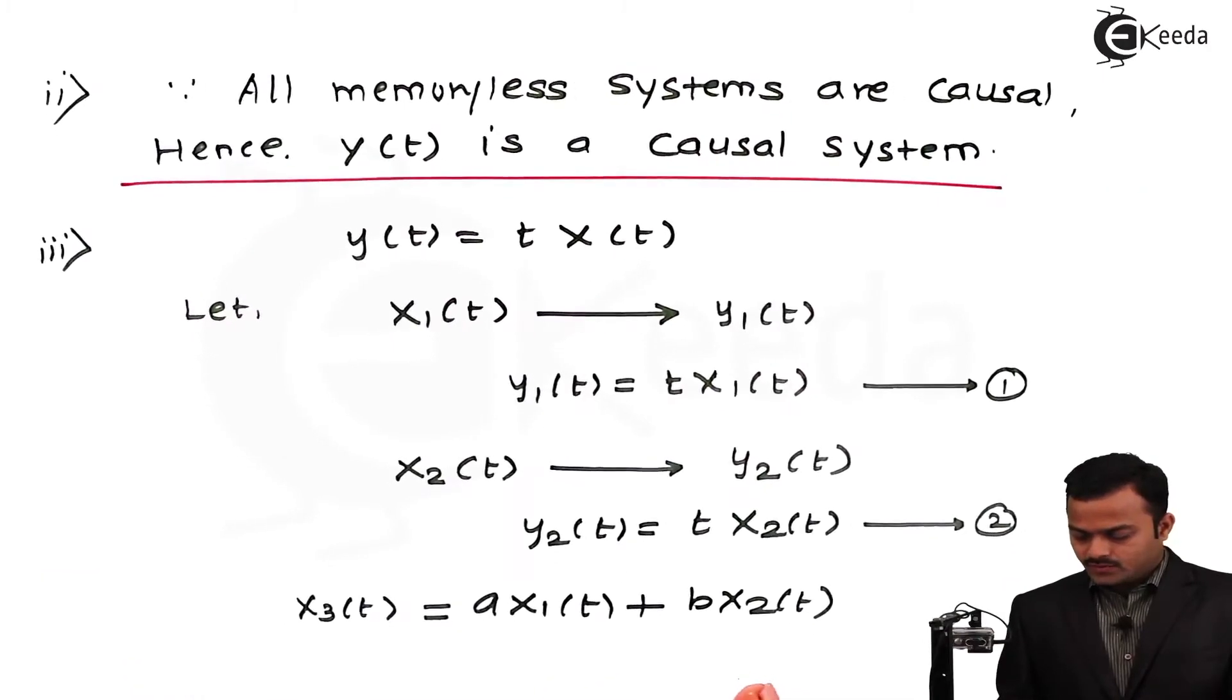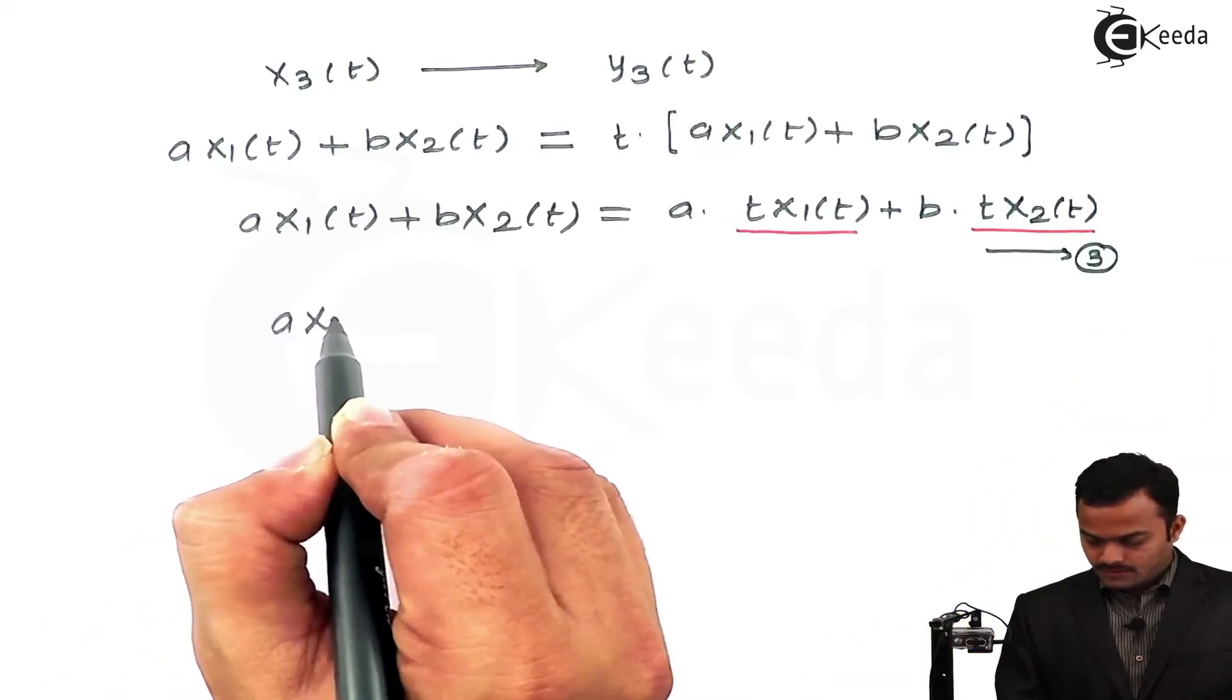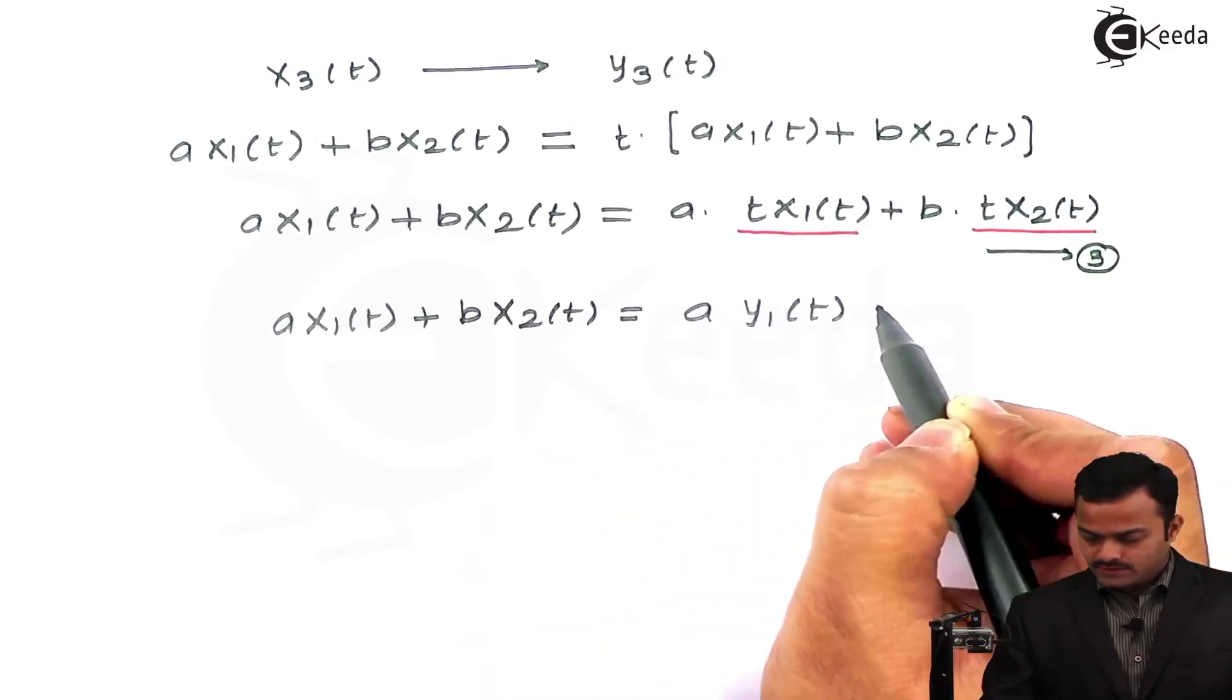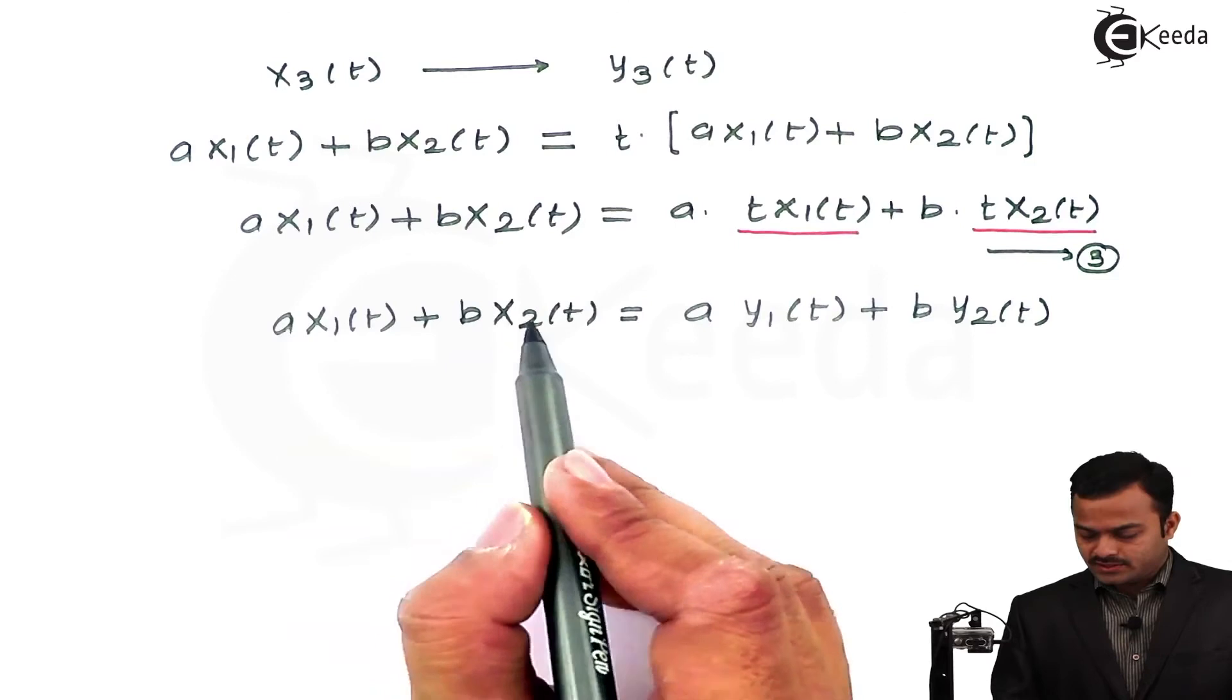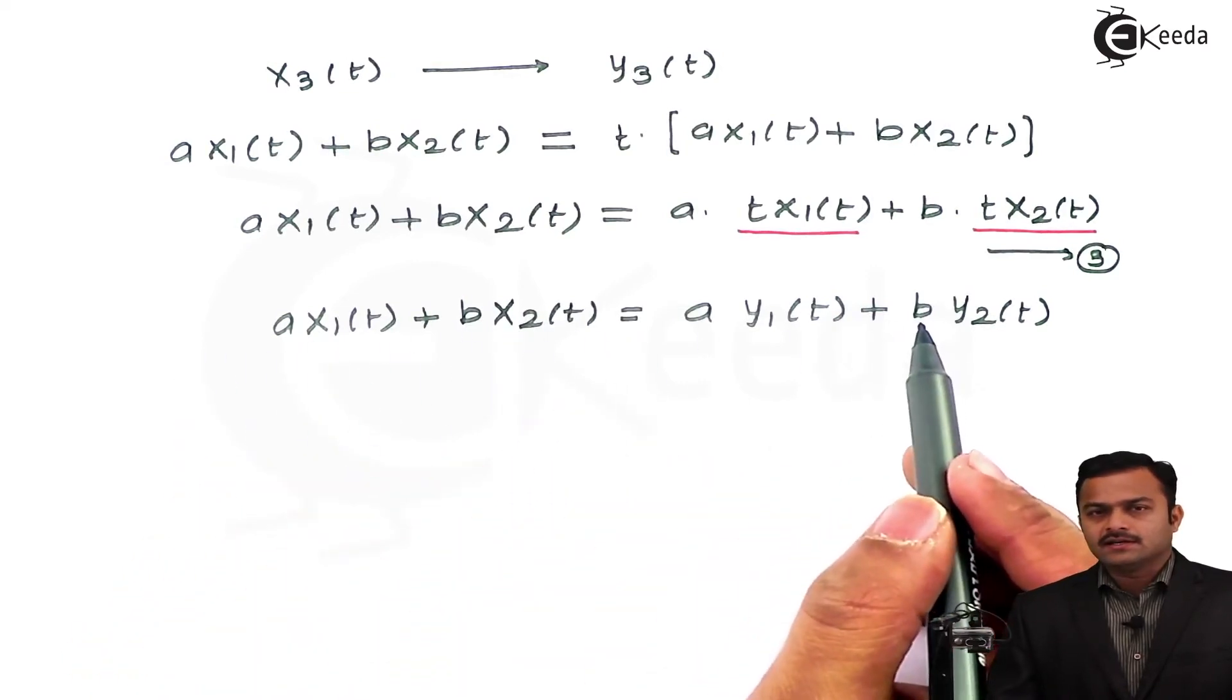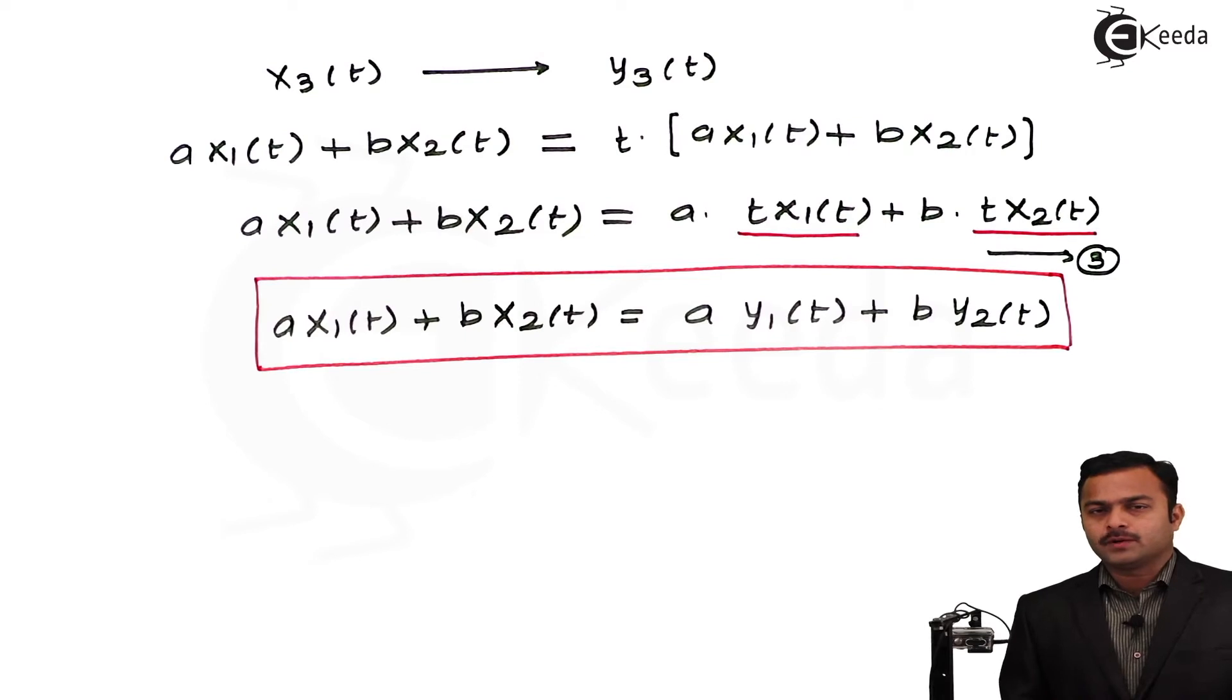Over here, I can say t·x₁(t) is y₁ and t·x₂(t) is y₂. So I replace these. I will get y₃(t), which is A·x₁(t) + B·x₂(t), is nothing but A·y₁(t) + B·y₂(t). So now what I can say over here, corresponding multiplication in the x₁ and x₂ results into output also. And at the same time, addition of two signals at the input side, resultant responses are also getting added. So this equation will state that this system is fulfilling two properties: homogeneity and superposition. Hence, y(t) is a linear system.